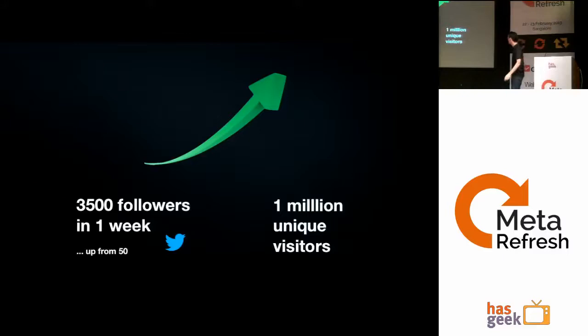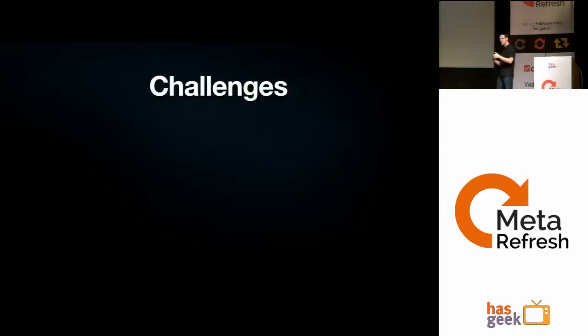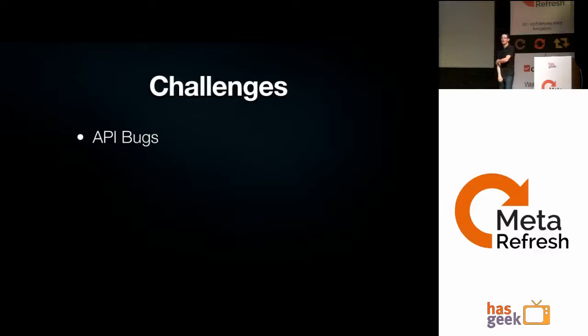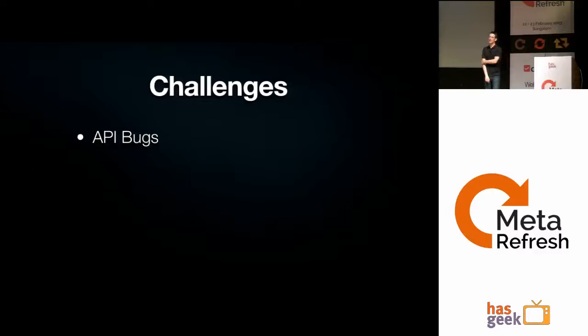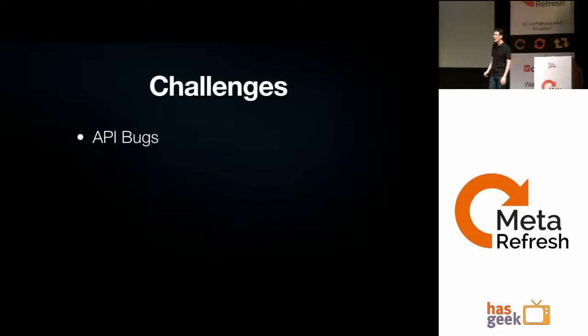HTML5 video, despite all its amazing potential, is really not as simple and flawless as you would think. The first problem is API bugs. The HTML5 video API has a lot of bugs — it's a mix of bugs and missing implementations because it's still not completely implemented everywhere. I believe it's because video is a bit more complex, as the API has to interface with a lower level for video decoding. Even today, there is no browser, not even the latest Chrome or Firefox, that has absolutely no bugs with this.